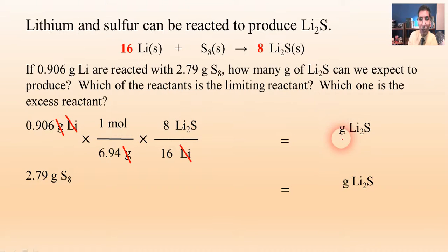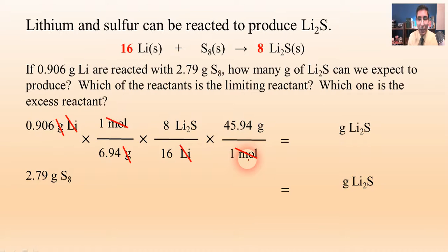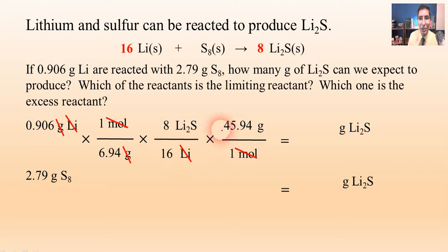We want to be in grams of lithium sulfide, so the last step is to convert to the final unit: grams. One mole goes on the bottom and grams on top. Li2S has two lithiums at 6.94 apiece and sulfur is about 32.1, so we add that up to about 45.94 grams in a mole. Moles cancel, and doing the arithmetic — 0.906 divided by 6.94, times 8 divided by 16, times 45.94 — gives us about 3.00 grams of lithium sulfide. Now that might be the answer, but we have to compare it to the next process.